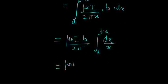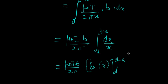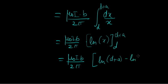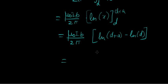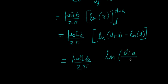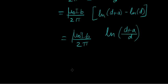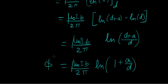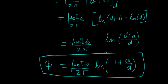This is pretty simple. μ₀iB/2π times ln(x) evaluated from d to d+a gives us ln(d+a) − ln(d), which equals ln((d+a)/d), which can also be written as μ₀iB/2π × ln(1 + a/d). So this is the flux induced because of that straight current conductor.